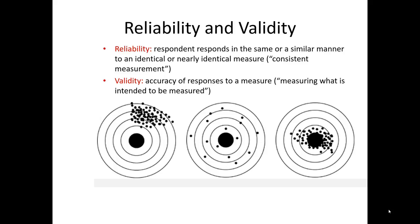Look at these three targets. Let's imagine our objective is to hit the bullseye. Which one represents a valid but not reliable result? That would be the one in the middle — notice how the shots are all scattered, often missing the mark, so it's not reliable, but if we averaged all of these bullets into one spot, it would be in the center. So even though it's inconsistent, we are attempting to hit the bullseye. Next question: which one of these targets is reliable but not valid? That's the bullseye in the far left — it's very consistent, but unfortunately they're not hitting the target. Finally, the last target on the far right appears to be both reliable and valid — it's hitting the mark, and that mark is what we intend to hit.